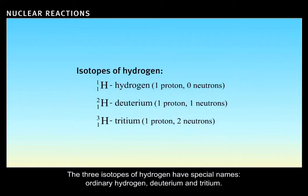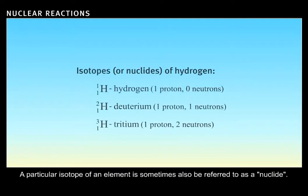The three isotopes of hydrogen have special names: ordinary hydrogen, deuterium, and tritium. A particular isotope of an element is sometimes also referred to as a nuclide.